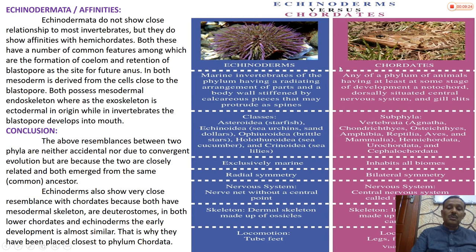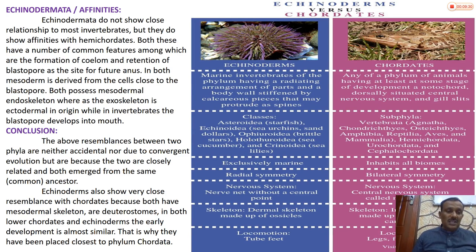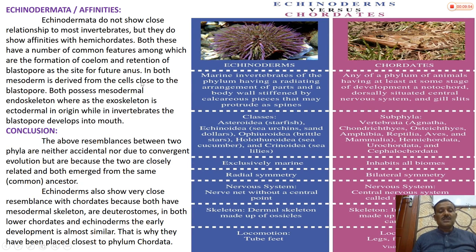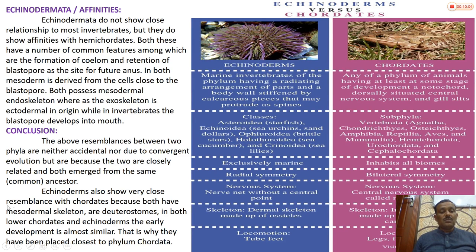Echinoderms are invertebrates but they show affinities and similarities with hemichordates, which are an animal group just before chordates. Both share a number of common features, including the formation of coelom and retention of blastopores. Mesoderm is derived from cells close to the blastopore in both groups.